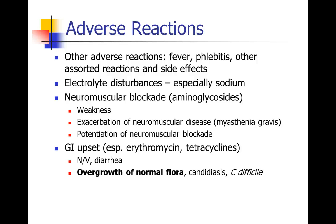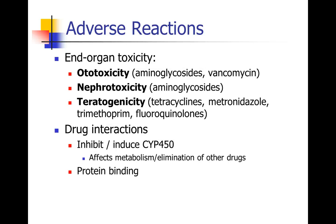For example, yeast like Candida and C. difficile exist in small but controlled amounts in our bodies. When certain normal flora are killed, these organisms tend to overgrow and cause disease. Some antibiotics can also be directly toxic: ototoxicity from aminoglycosides and vancomycin, nephrotoxicity from aminoglycosides and perhaps vancomycin, and teratogenicity from a number of antibiotics — not surprising since these drugs target DNA synthesis and cell reproduction. Finally, there may be drug interactions, often involving the cytochrome P450 system or altering the protein binding of other medications.